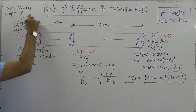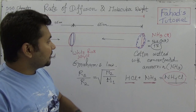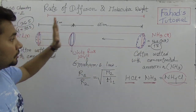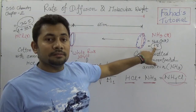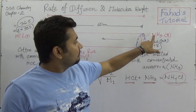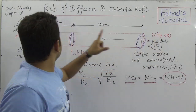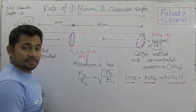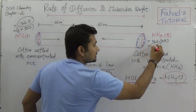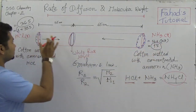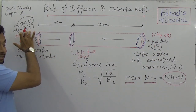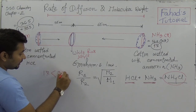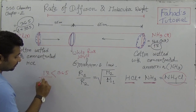For hydrochloric acid (HCl): hydrogen is 1 and chlorine is 35.5, so the molecular weight of HCl is 1 + 35.5 = 36.5. So ammonia has a molecular weight of 17 and hydrochloric acid has a molecular weight of 36.5.